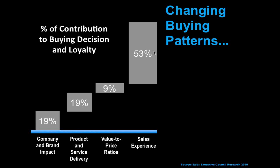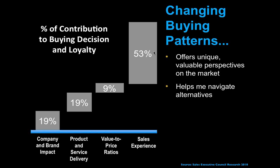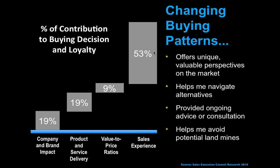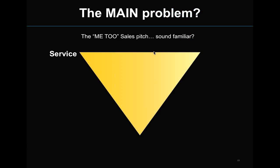The results: 19% of the buying decision was based on company and brand impact, 19% based on product and service delivery, and only 9% made their decision based on lowest price. But 53% of the decision was based on the experience they had with the salesperson. Isn't that interesting? So the research goes on to ask: what are the specific characteristics of the sales experience that was most valuable? Number one — they worked with somebody that gave valuable perspectives on the market. That's education-based marketing.